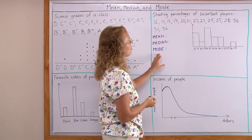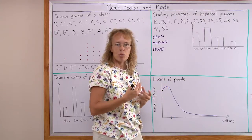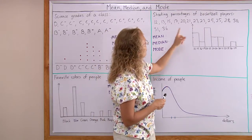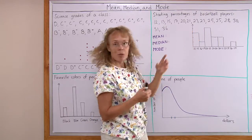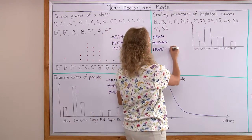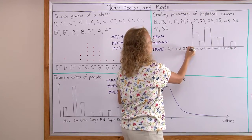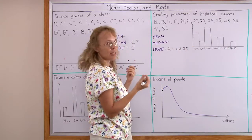To calculate the mode might be easiest, just check the list and check what number occurs most often. There's 23, but there's also 25. This data has two modes. So the mode is 23 and 25, because both of them occur twice as often.